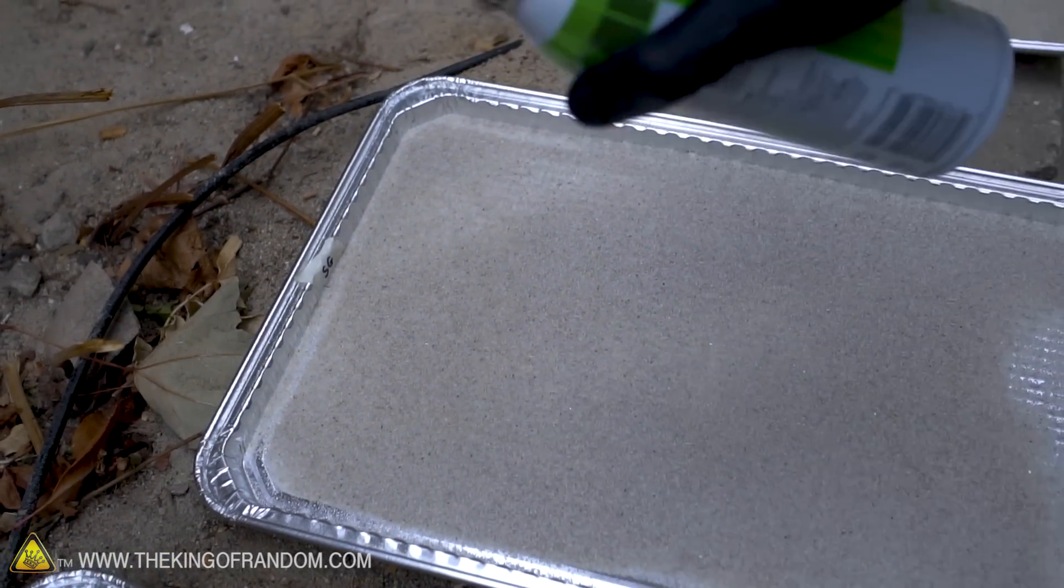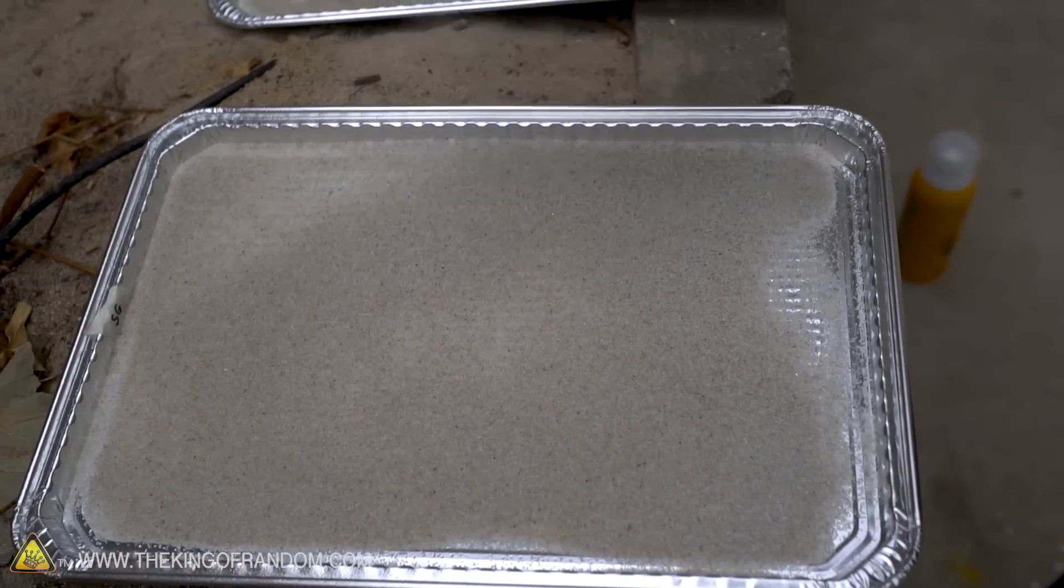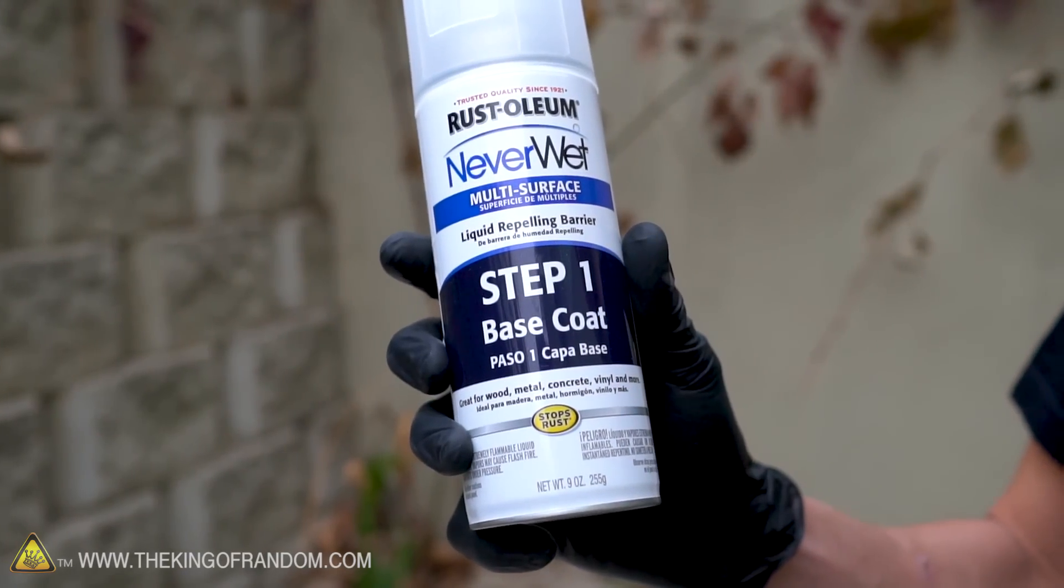Next up the Scotch guard and finally the Neverwet. Now this does come in a two-part system so we'll have to apply step one, let that dry for the appropriate amount of time, and then apply step two.